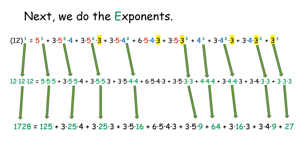4 squared is 4 times 4, another 16. 3 squared is 3 times 3, which is 9. 3 cubed is 3 times 3 times 3, which is 27.